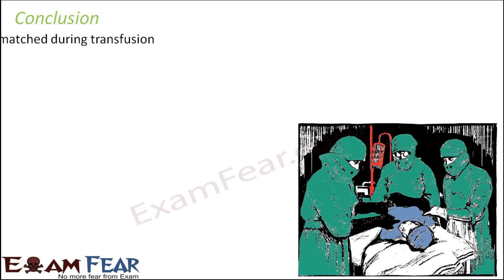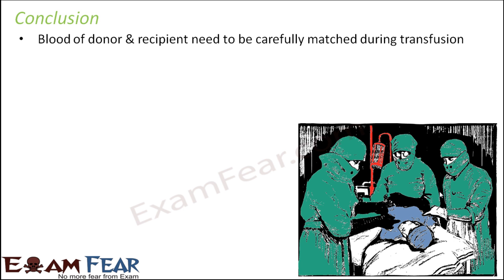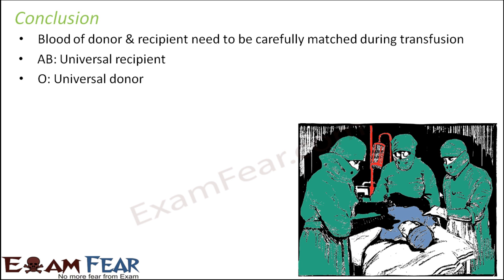So the conclusion is that blood of donor and recipient need to be carefully matched during transfusion. Whenever a patient is admitted to a hospital for any injury or illness, the blood group of the patient should be detected so that steps can be taken accordingly. AB is the universal recipient — it can take blood from A, B, AB, or O. And O is the universal donor because it can give blood to any other blood group, whether it is A, B, AB, or O.